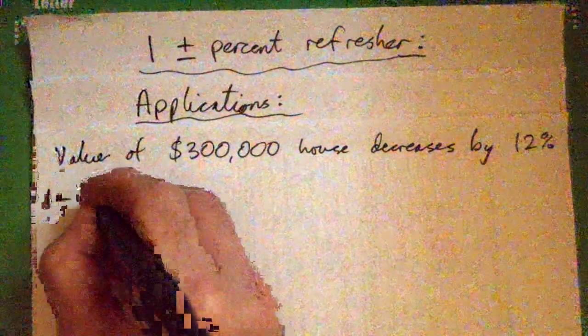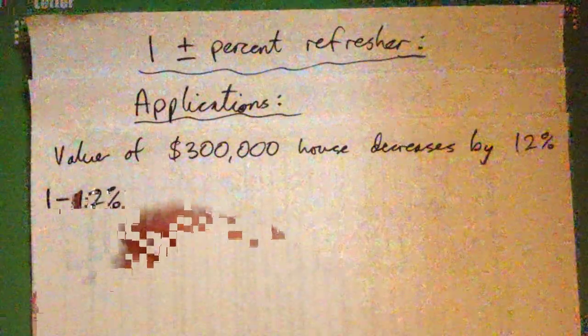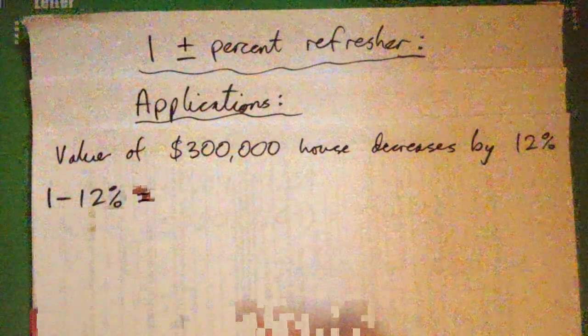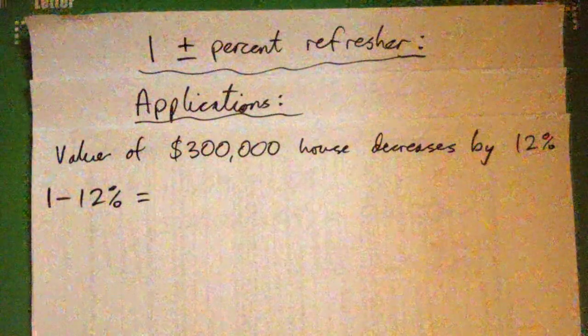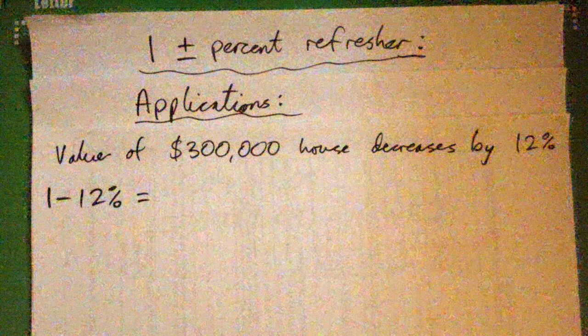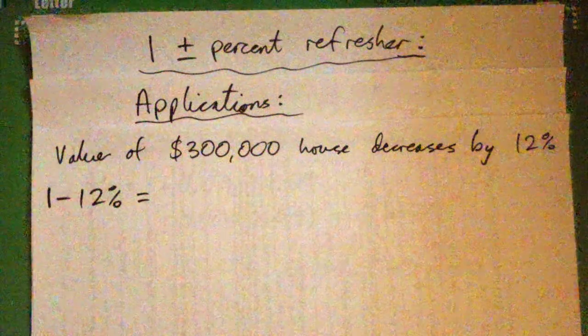1 minus 12%. Write that as a decimal. So take your time. Write that as a decimal and then just 300,000 times something to get the answer right off the bat. That's what I'm looking for here.